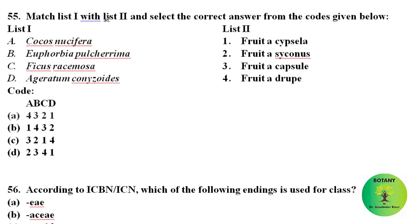Match list one with list two and select the correct answer from the codes given below. Botanical names are given in list one and types of fruit in list two. Cocos nucifera has fruit type drupe; Euphorbia pulcherrima has a capsule; Ficus racemosa has a syconus; Ageratum conyzoides has a cypsela. The correct answer is option A.